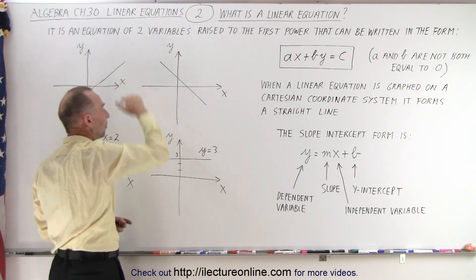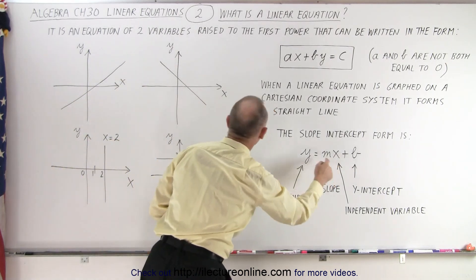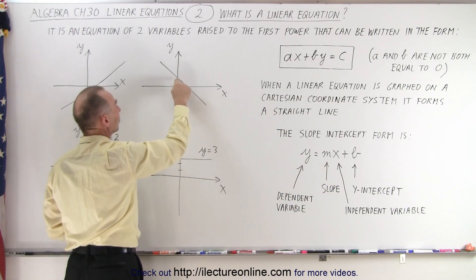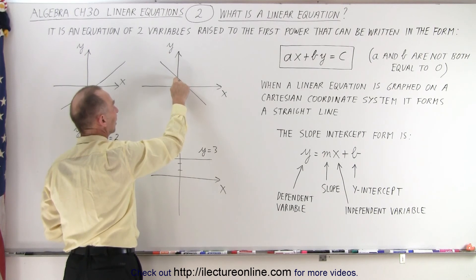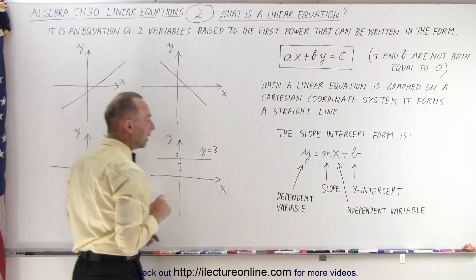m stands for the slope of the equation which has to do with how steep the equation is. Here it slopes downward, here it slopes upward, and b is the place where the line crosses the y-intercept, where it crosses the y-axis like right there and right there.